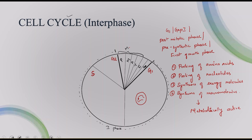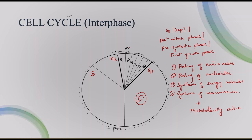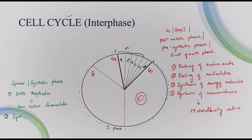Now let us enter into the S phase, also called the synthetic phase. The main thing that happens here is DNA starts to replicate. After replication, there will be the formation of two sister chromatids and the formation of centromere. There will also be the synthesis of histones. Histone is a basic protein that gives shape to chromosomes and controls the activity of genes.